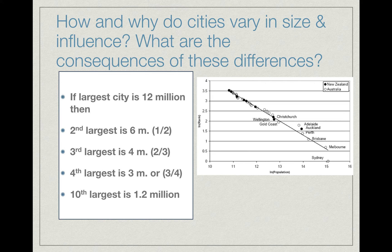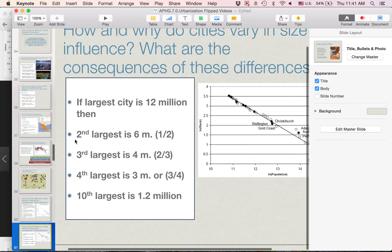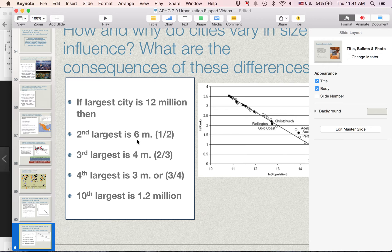This means that if the largest city is 12 million people, then the second largest city would be half the size of that — which would be 6 million people. The second largest city becomes the denominator: half as large, 12 to 6. If the largest city is 12 million, then a place that follows rank-size rule would have the third largest city at one-third the size.